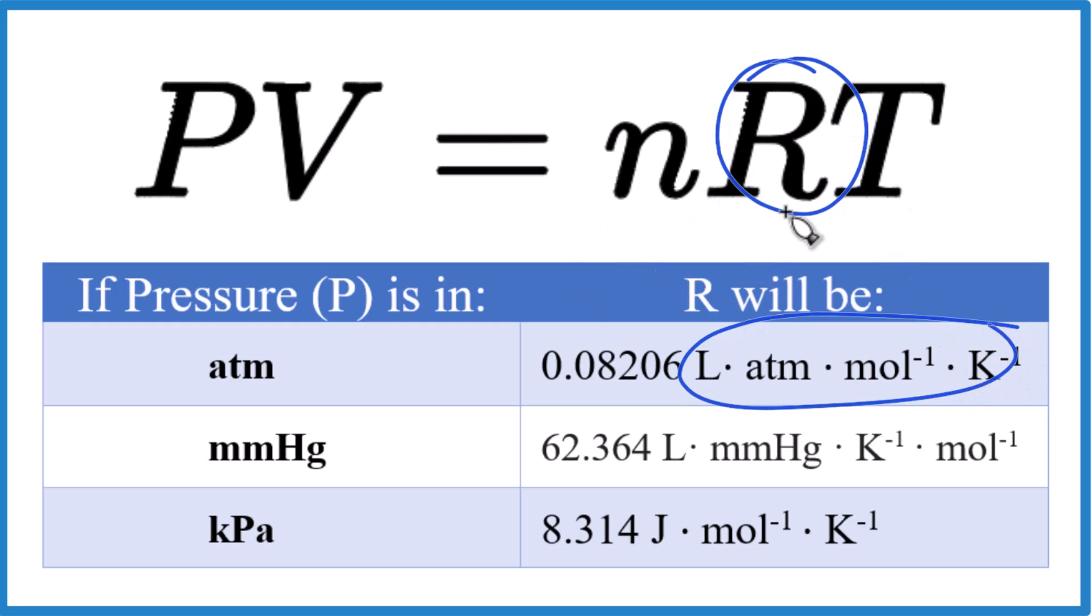One of the big things is it helps things cancel out. What you'll notice is that when we look at R down here, if we have atmospheres for our pressure, that means we'll use this version of R here. And you can see we have liters. That's our volume. So your volume has to be in liters for R to work.